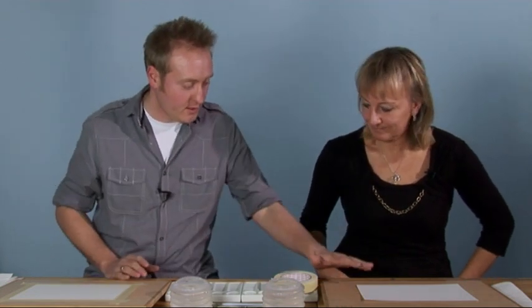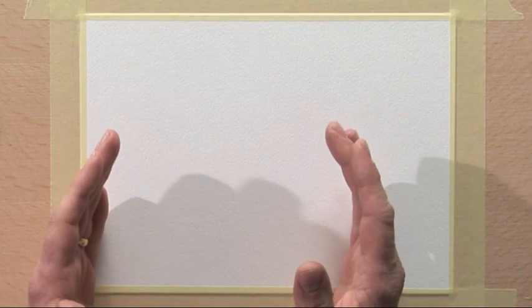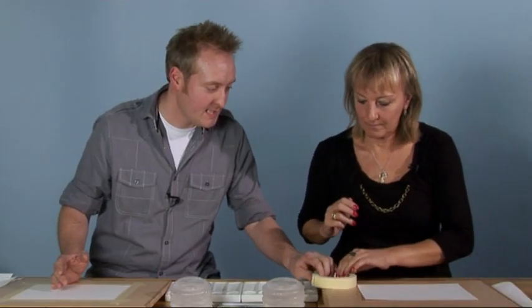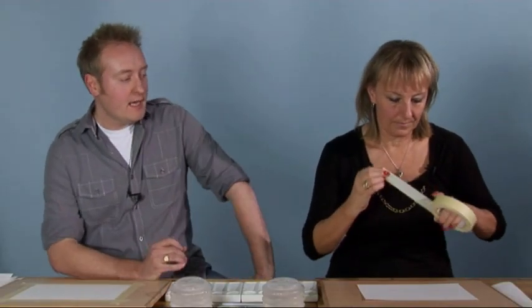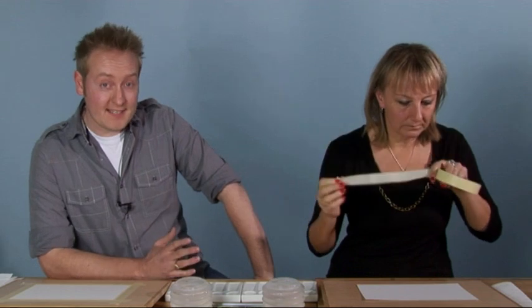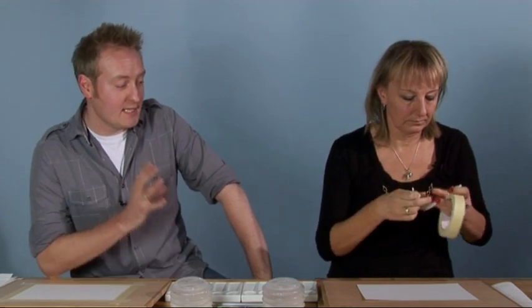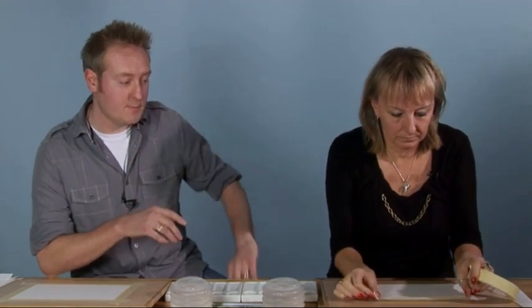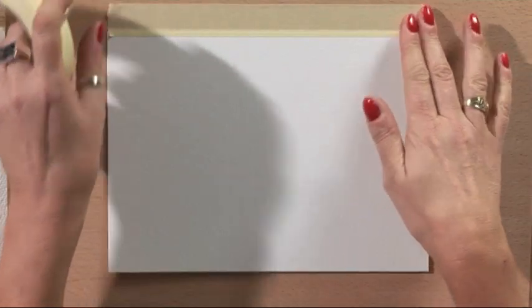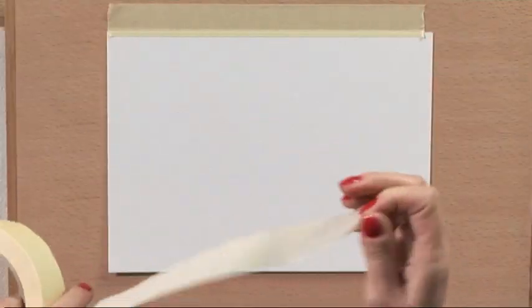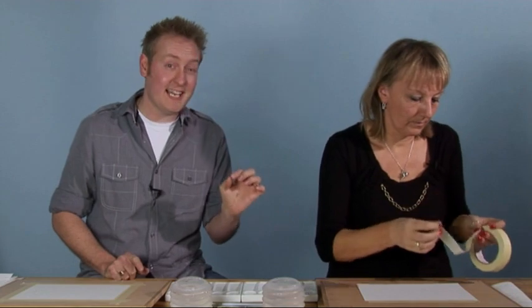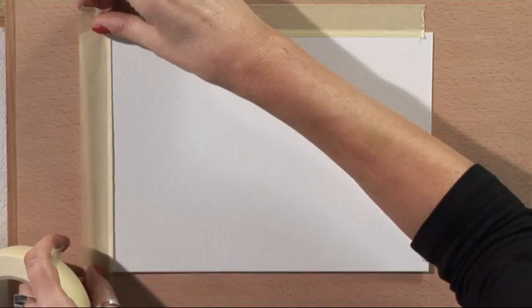First of all, you've got a sheet of watercolor paper there. Now that's floating around at the minute. We need to get it stuck down to your board. So if you could just put some masking tape on all four edges. You'll end up losing just a little tiny bit of your painting when you're doing this, but that's fine.